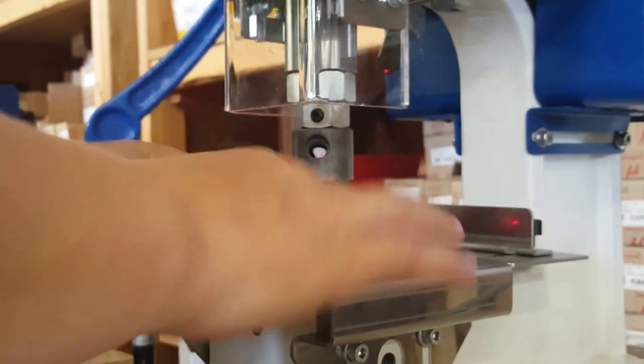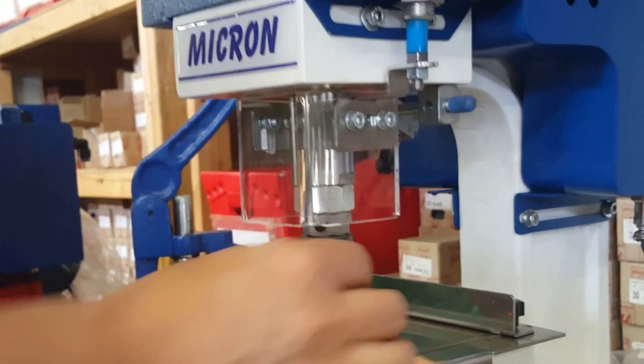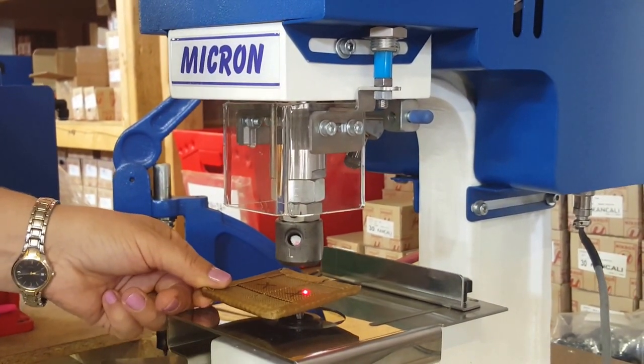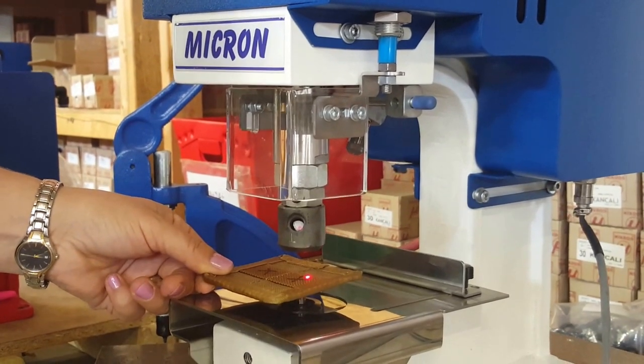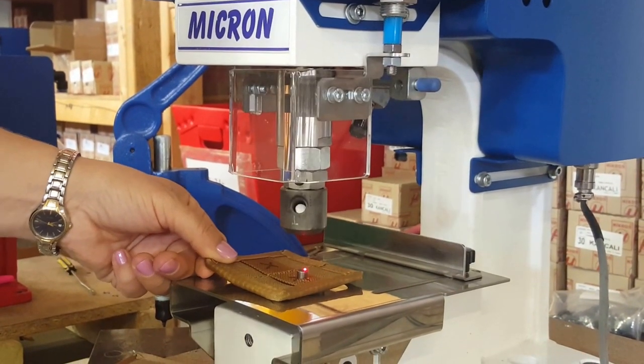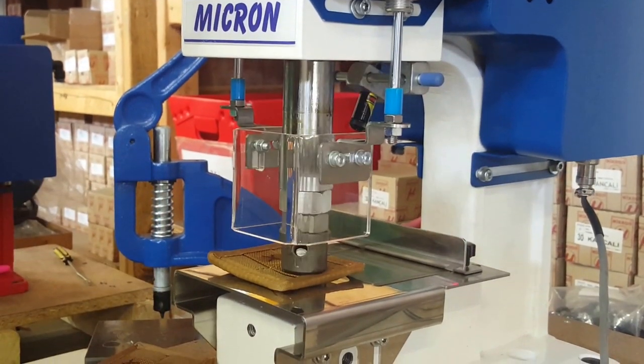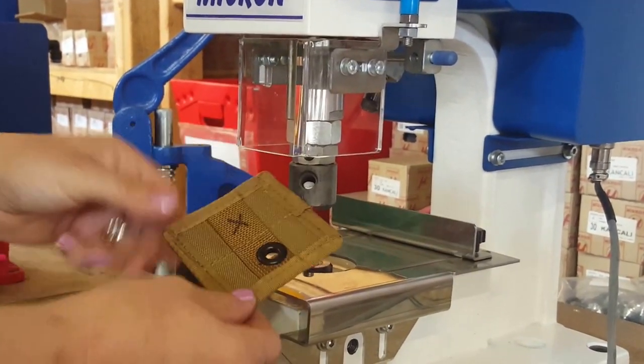We are going to demonstrate now placing the washer at the bottom. The Velcro material in between. You put the laser right on the X. You put the grommet on top. Step on the pedal and it attaches the grommet.